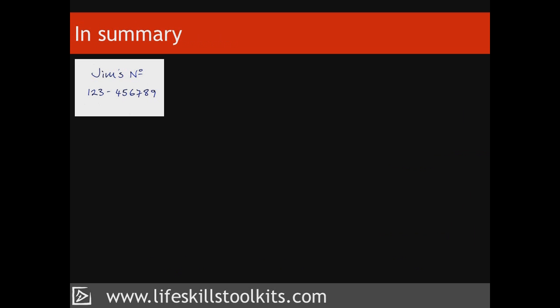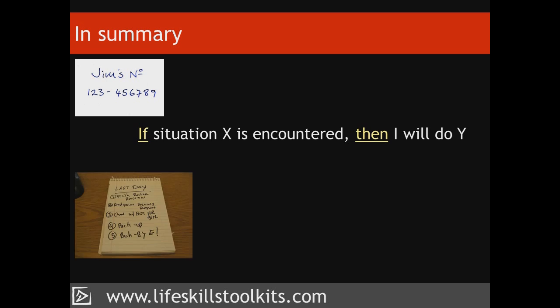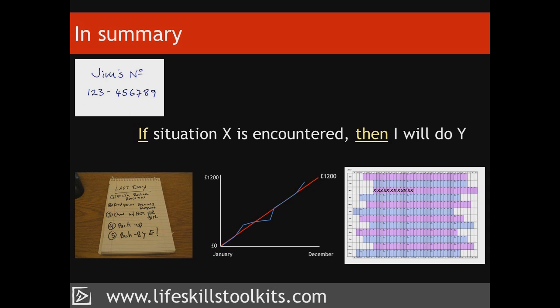Achieving our goal involves taking action. Implementation intentions are a powerful tool for helping us to do this. Keeping to-do lists, plotting our progress using graphs, and creating motivation chains are three ways of managing our progress, so that with regular and consistent action, we reach our desired goal.